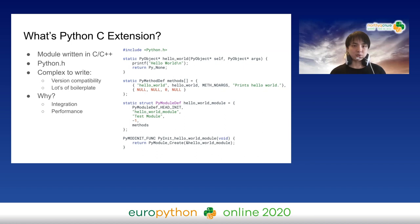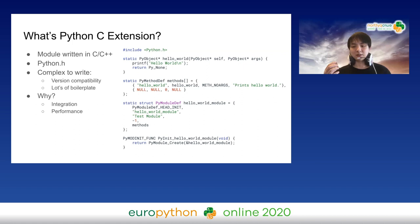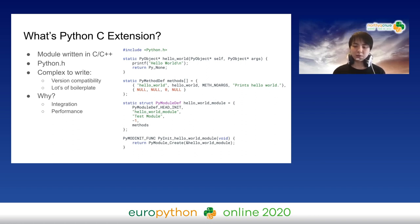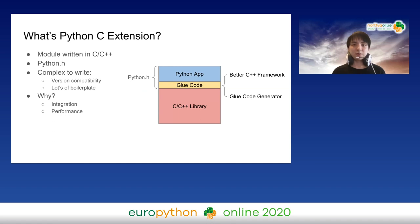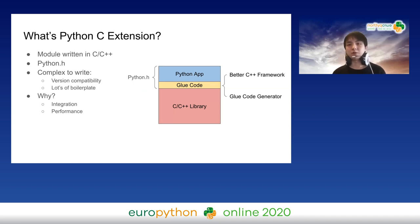What does a Python C extension actually look like? A C extension module retains your C++. On the right side is a short example. All the code does is create a module and try to print hello world. On the first line, you can see the header Python.h, which includes all the APIs you need for manipulating Python objects within C++ space. It's quite complex to write, and the API itself varies from version to version. To make things easier, people have tried to come up with simpler ways — for example, better C++ frameworks and glue code generators — which help ease the pain of writing glue code.